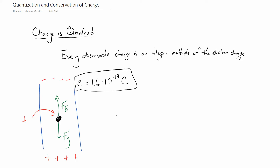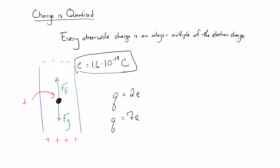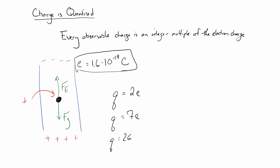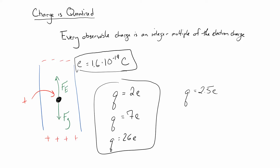So you can find charges in nature — you can find a charge Q that looks like 2 times the electron charge, or 7 times the electron charge, or 26 times the electron charge. All of these can exist. What you cannot find is something that's 2 and a half times the electron charge, or negative 12.7 times the electron charge, or 2/3 the electron charge — at least, you can't find it isolated in nature.